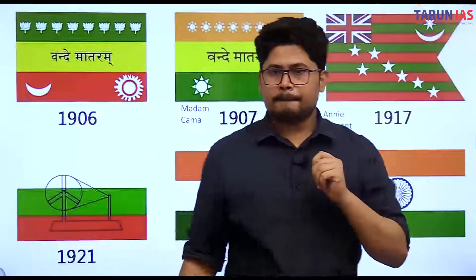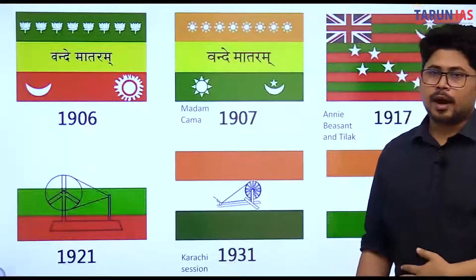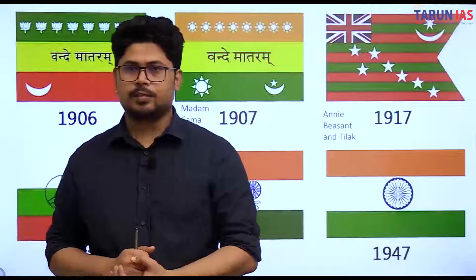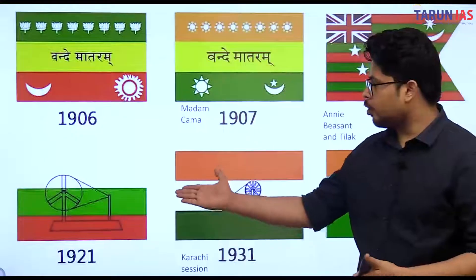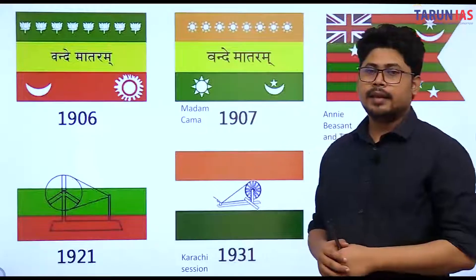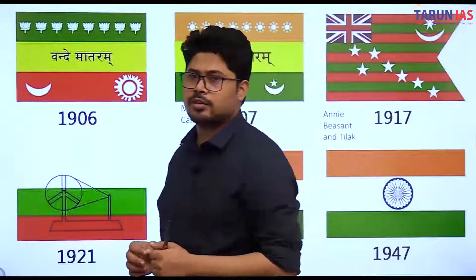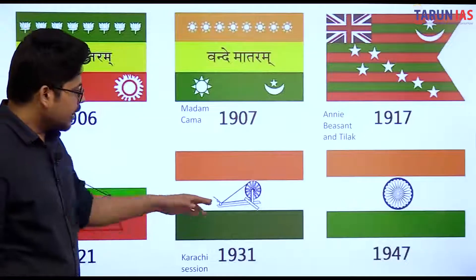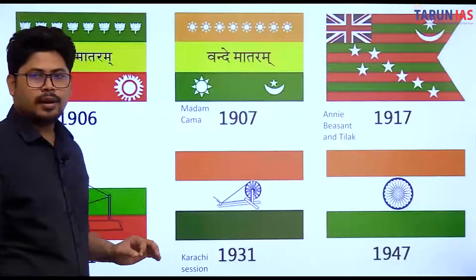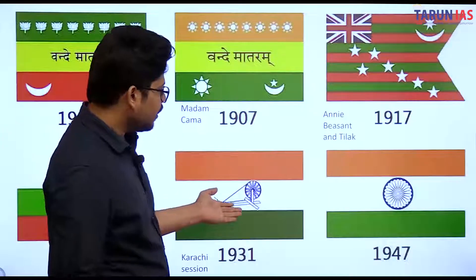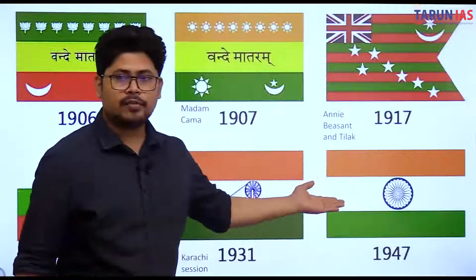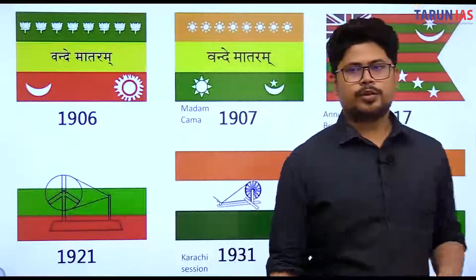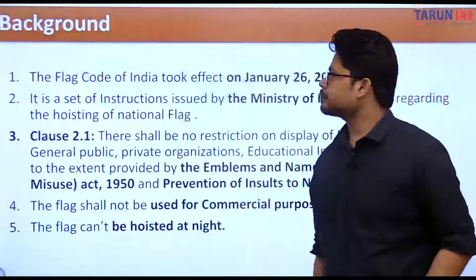In 1921, Mahatma Gandhi began promoting the Charkha as the basic symbol of Swaraj, and Congress adopted this flag. In 1931, at the important Karachi session, Congress adopted a flag with the Charkha properly aligned in the white stripe. Finally, in 1947, the current flag designed by Pingali Venkaiya was adopted, with the Charkha replaced by the Ashok Chakra.